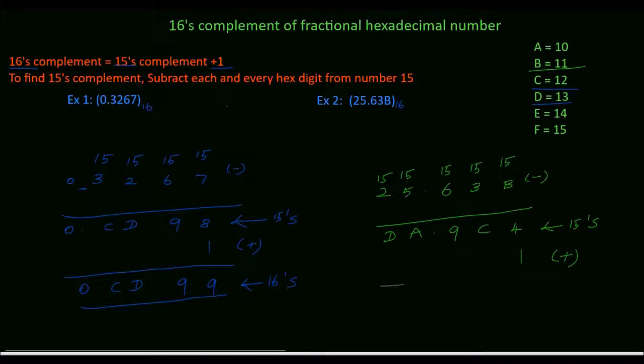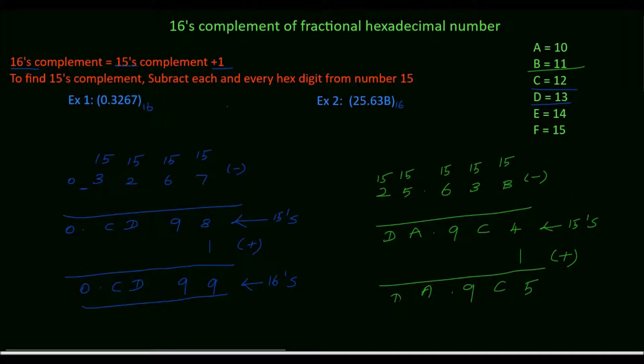add 1 with the rightmost digit. 4 plus 1 is 5. Write the remaining digits as it is. DA.9C5 base 16 is the 16's complement.